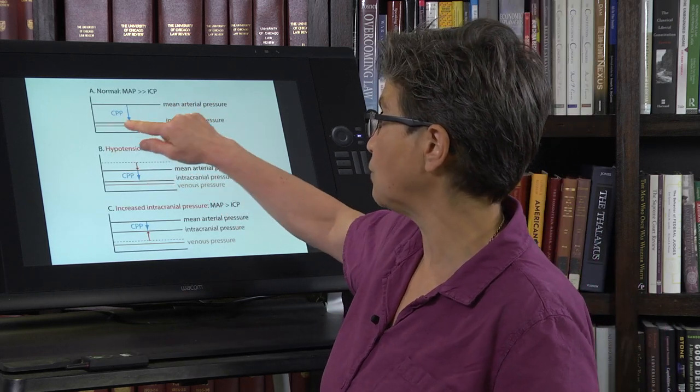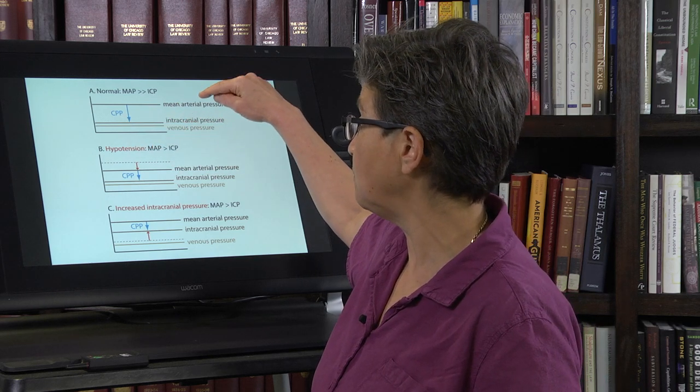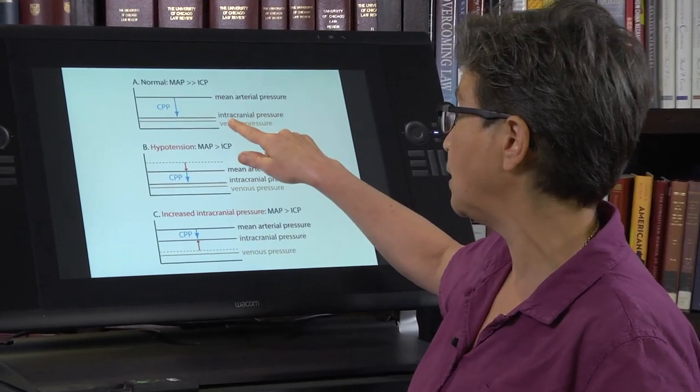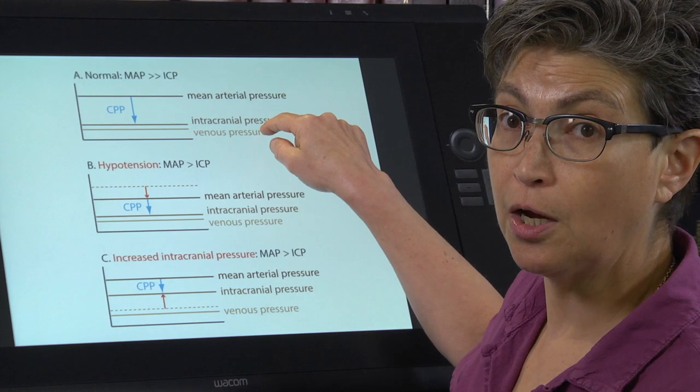So as I just said, cerebral perfusion pressure is normally mean arterial pressure minus intracranial pressure. Intracranial pressure should be fixed at about 15 millimeters of mercury.